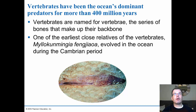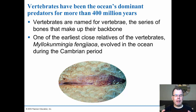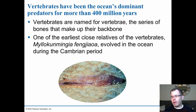Vertebrates have been the ocean's dominant predators for more than 400 million years. Between 500 and 400 million years ago, we had the Cambrian explosion, which brought great diversity of animals. We saw bilateral symmetry, and at about that time we see the first fossils of vertebrate-like animals. Some of our closest relatives in the vertebrate family don't look like vertebrate animals, but you start to see segmentation, the notochord, and other dominant features. One of the first fossil evidence of vertebrates appeared about 450 million years ago.